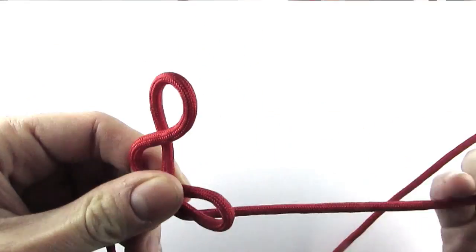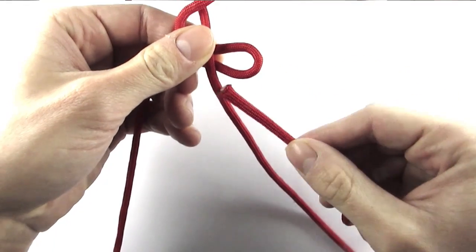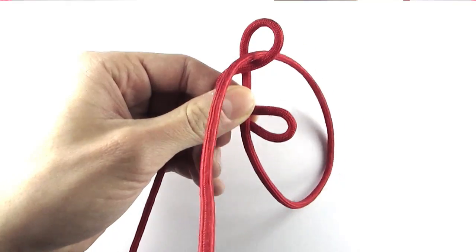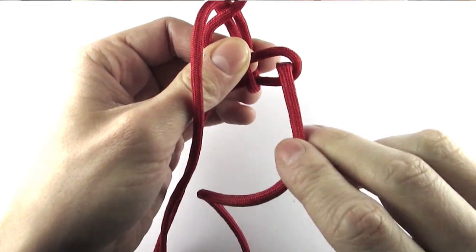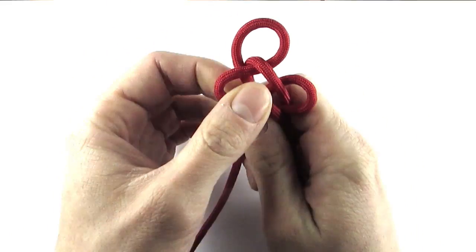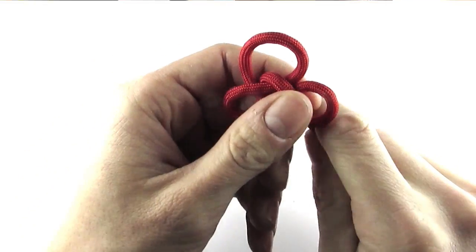So it goes over, under, under. And then we take the bottom cord, fit it behind the knot, then through the top loop and through the bottom loop. And then we tighten the knot up by pulling on each of the cords to remove the slack.